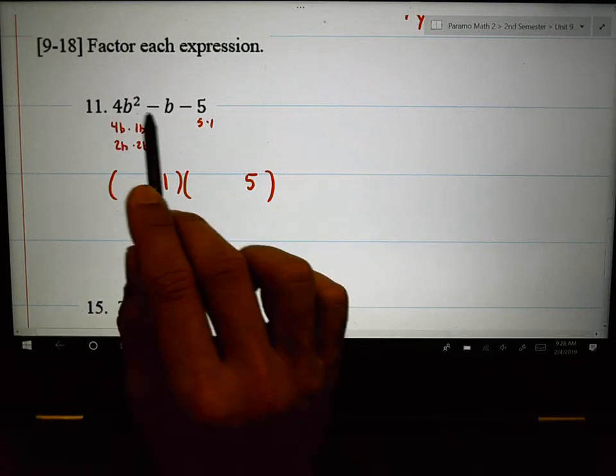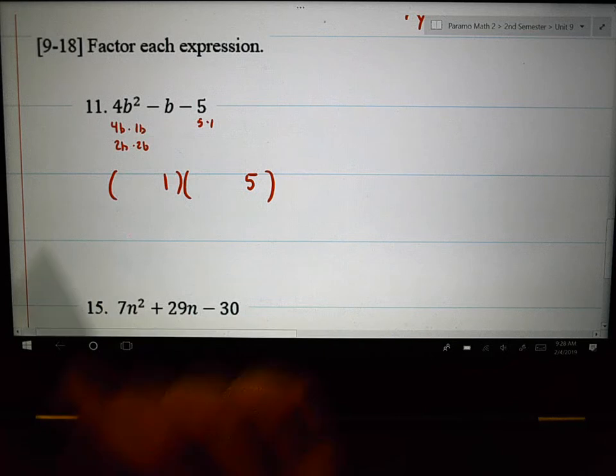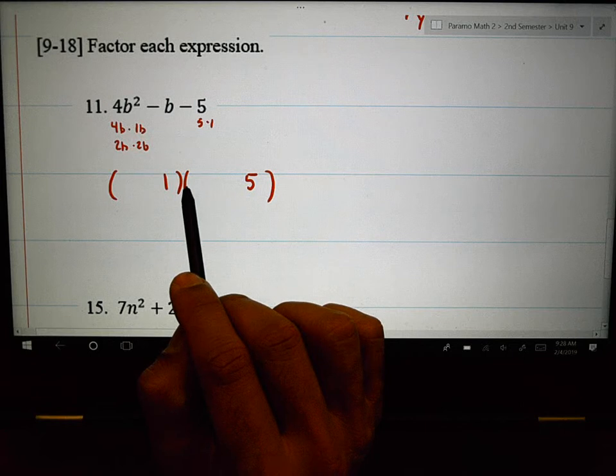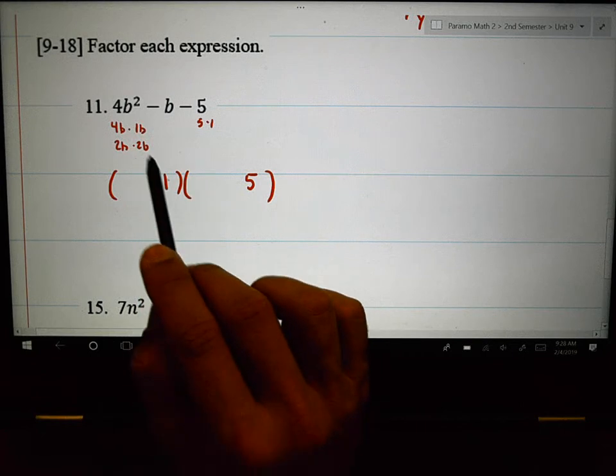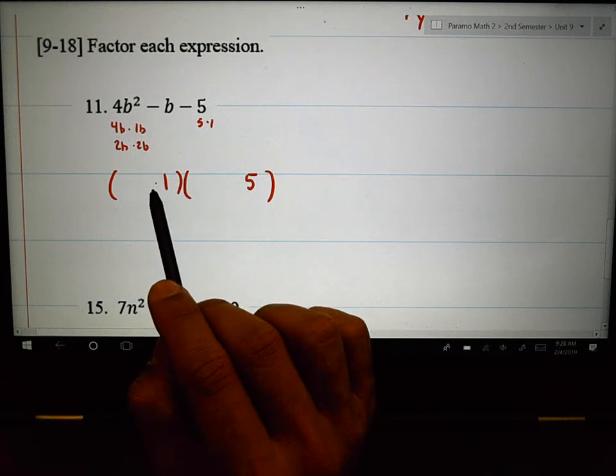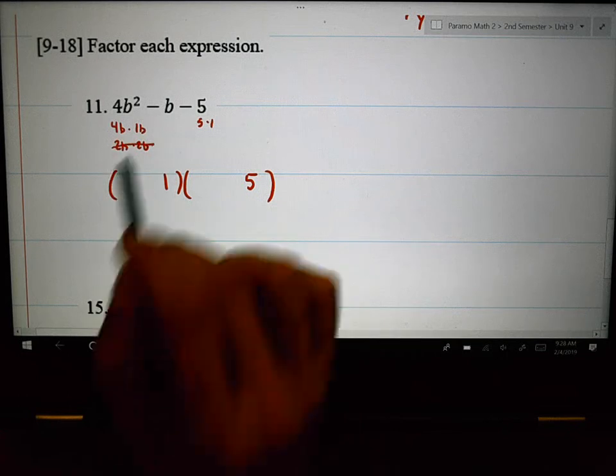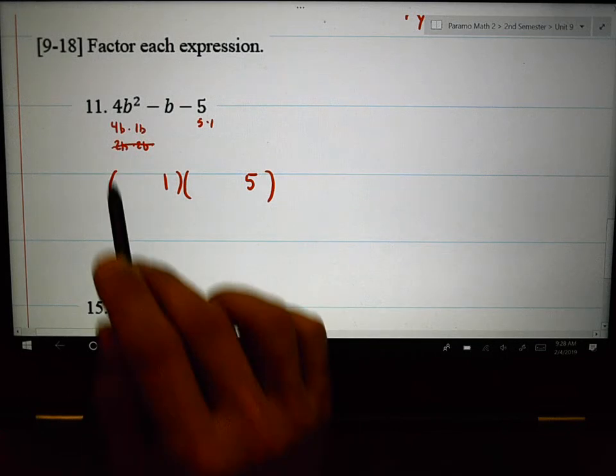So, 1 times 5 is 5. It's the only way to get to a prime number. And so, now to get to this negative B, I have to think of, if I did 2 and 2, 2 times the 5 would be 10. And 2, 10 is 12 or 8. That doesn't make negative B. It's probably not going to be these guys. It's probably got to be the 4B and the 1B.